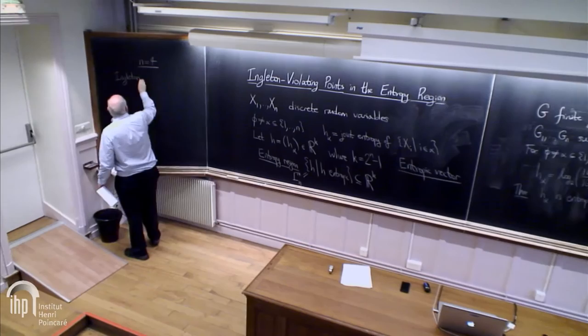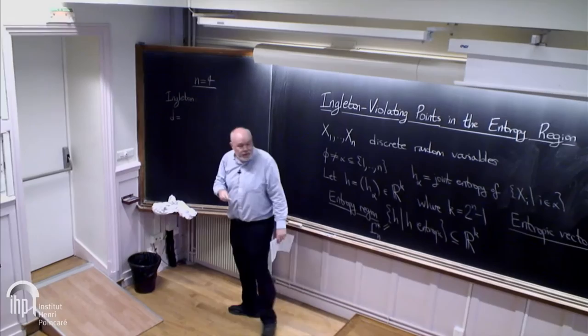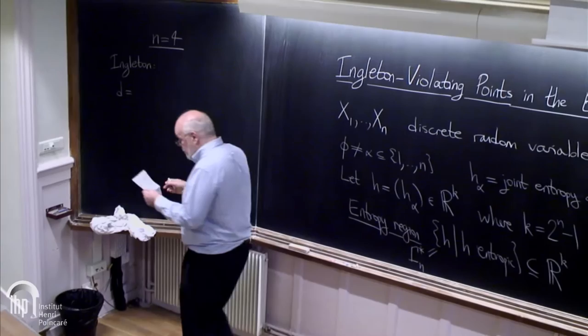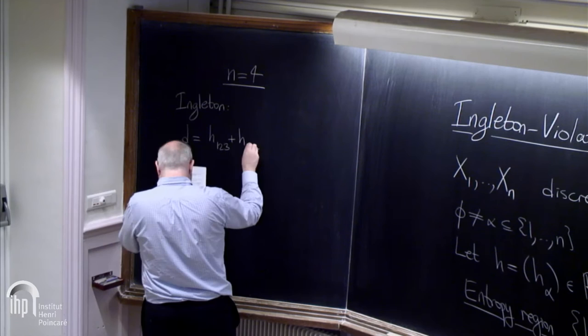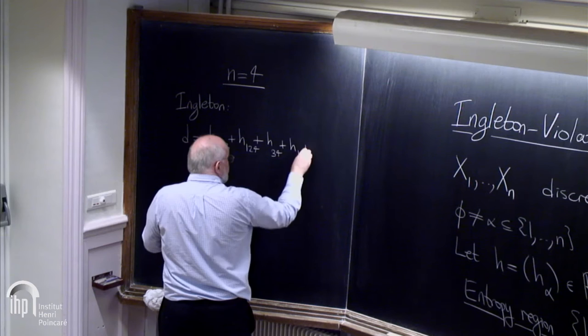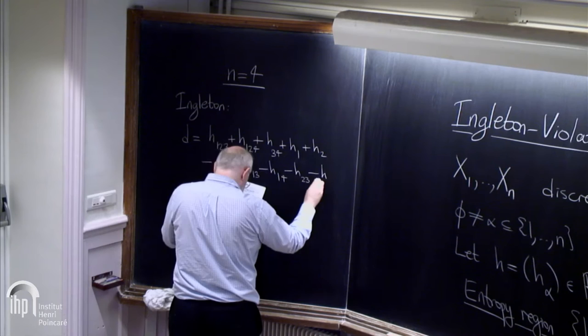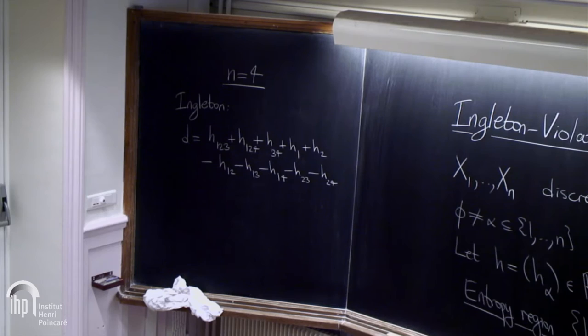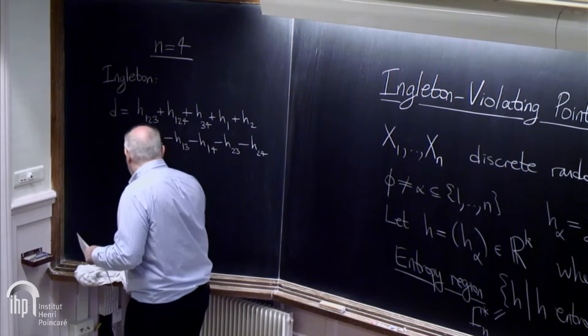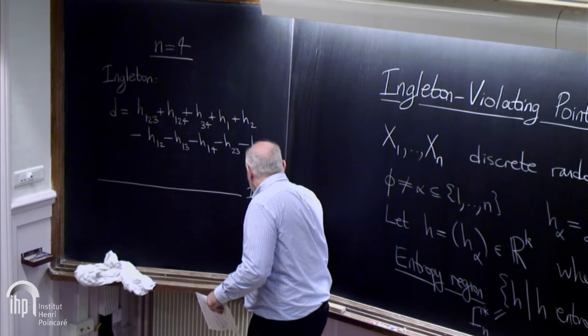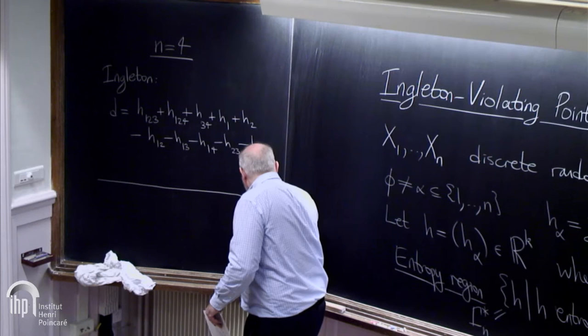Let's focus on n equals 4. We're interested in a certain expression due to the British mathematician Ingleton. For n equals 4, there are 15 dimensions. D is this expression here, which seems pulled out of nowhere, but it's very important. It involves 10 of the 15 variables. If you do permutations of 1, 2, 3, 4, there are 6 such expressions, but I'll stick with this one.